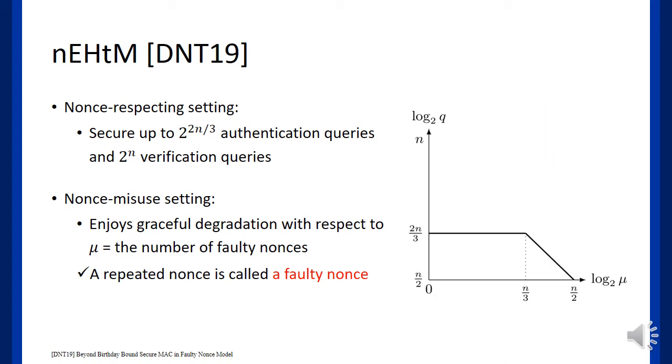The originally proposed security bound is shown like this. The graph shows the threshold number of authentication queries according to the number of faulty nonce queries. Before 2^{n/3} faulty nonce queries, one can observe that the security bound is preserved up to 2^{2n/3} authentication queries, and then it degrades gracefully.